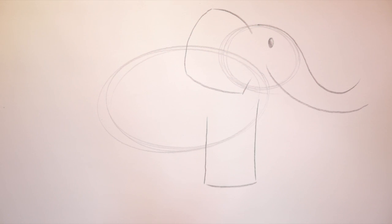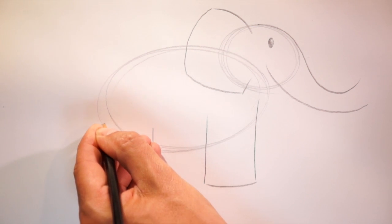For the rear leg, we'll start right about here, down, across, back up towards the oval, and around like that.